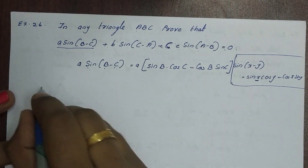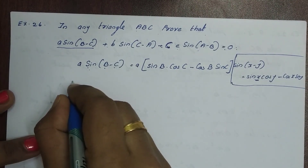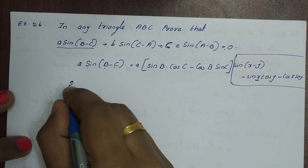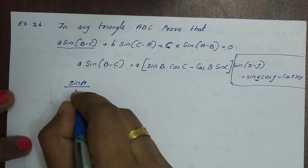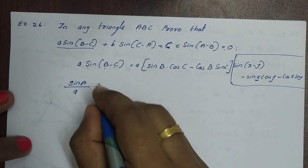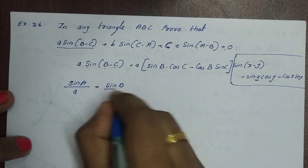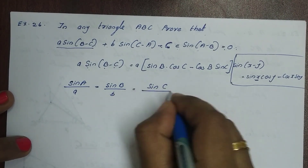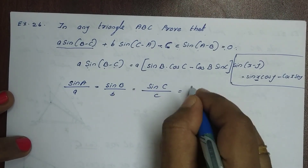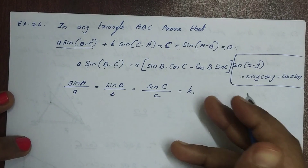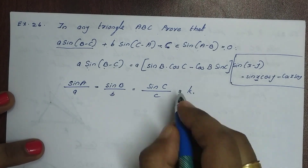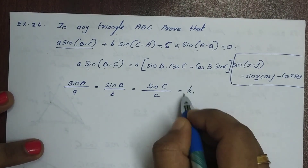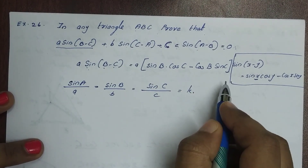Now we will apply the sine rule. The sine rule states: sin A / a = sin B / b = sin C / c = k. We will use k to substitute and cancel appropriately.